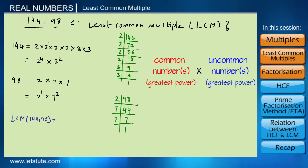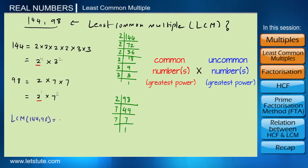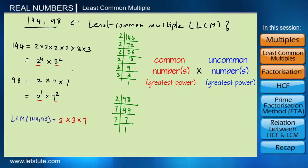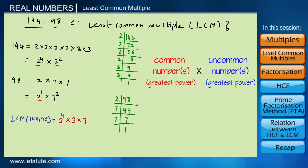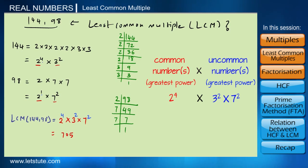To find the least common multiple, we take the product of common and uncommon factors with the greatest power. The only common number in both 144 and 98 is 2, and the uncommon numbers are 3 and 7. We take the greatest power of each: 2 has powers 1 and 4, so we take 2 raised to 4; 3 raised to 2; and 7 raised to 2. Therefore, the least common multiple of 144 and 98 equals 7056.